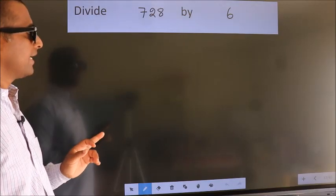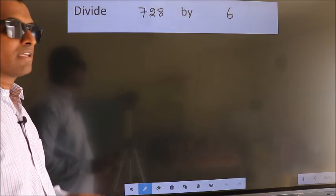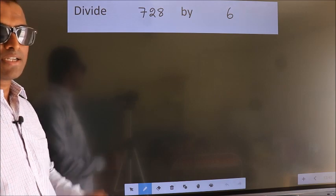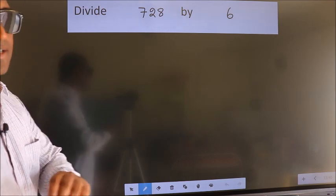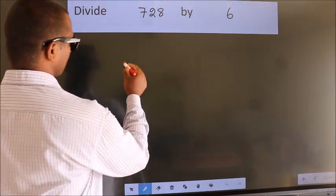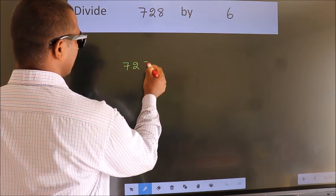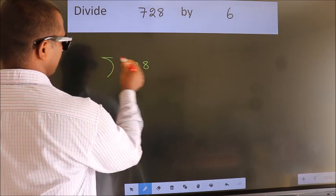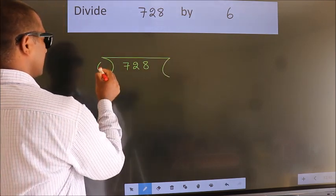Divide 728 by 6. To do this division, we should frame it in this way. 728 here, 6 here.